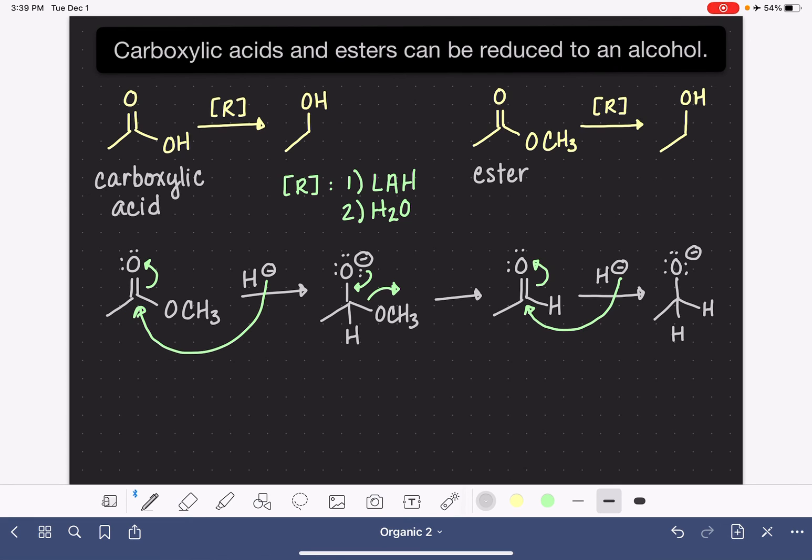At this point, there isn't anything else that the molecule can do other than just proceed with protonation. This is where we bring in the water in step two of these reagents. The water molecule is used as a source of H-plus to put a hydrogen on that oxygen with the negative formal charge. And here is the alcohol that is formed.